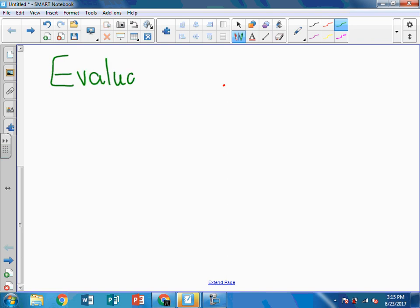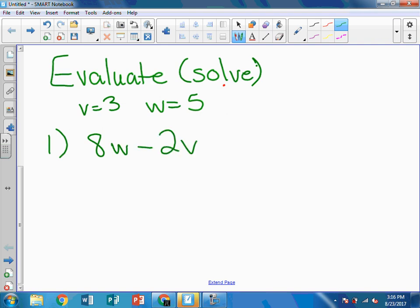And to evaluate means that we solve them. We find the answer. Alright, so I'm going to tell you first that we are going to let V equal 3 and W equal 5. And I'm going to give you three expressions. And we're going to solve two of them together. And then one of them is going to be your secret problem. So, number 1, 8W minus 2V. So what we're going to do is we're going to substitute those numbers in and then use order of operations to work it out.